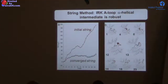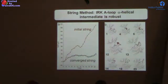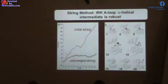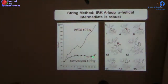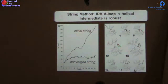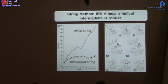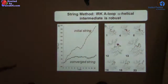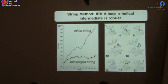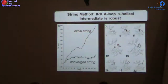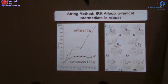Applying this to the kinase problem, we used configurations harvested from TAMD simulations to generate an initial path for 22 images, then let the string converge to the minimal free-energy path. The helical intermediate was robust — it appears to be a genuine element of the transition mechanism for forming the active kinase. This is also significant because a helical intermediate is a potential drug target that could keep the kinase from reaching the active form.